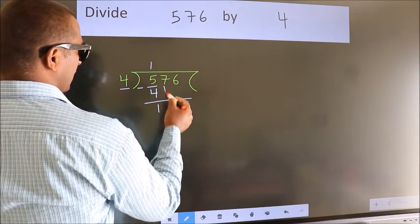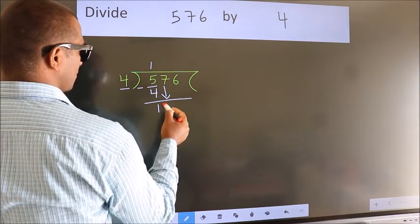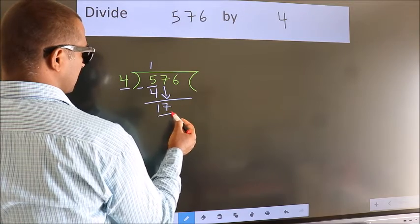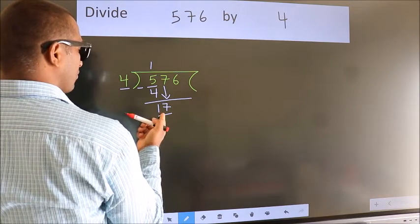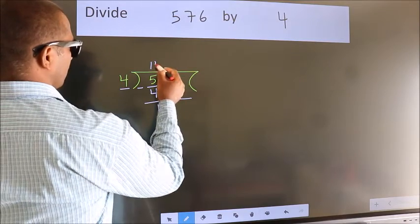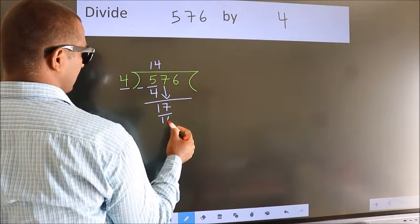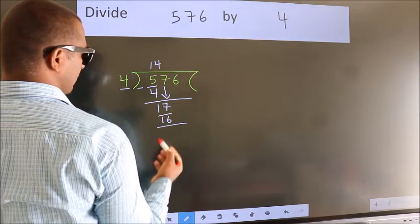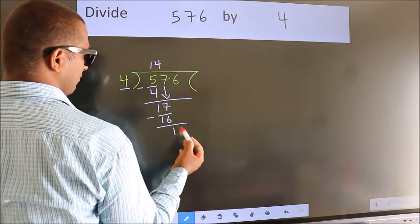After this, bring down the beside number. So 7 down. So 17. A number close to 17 in the 4 times table is 4 fours, 16. Now we subtract. We get 1.